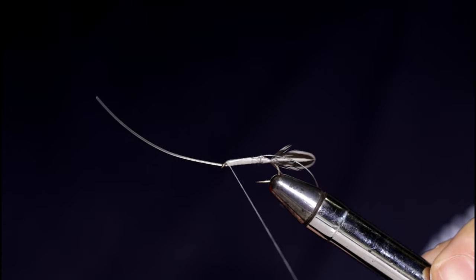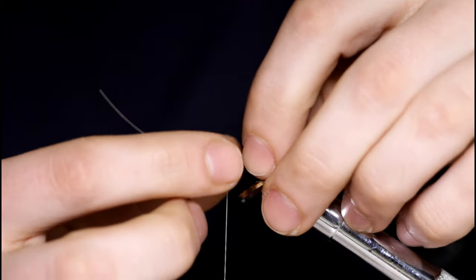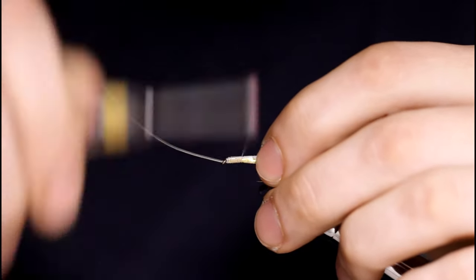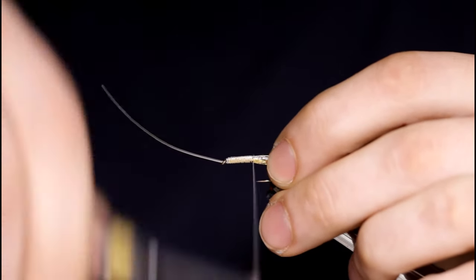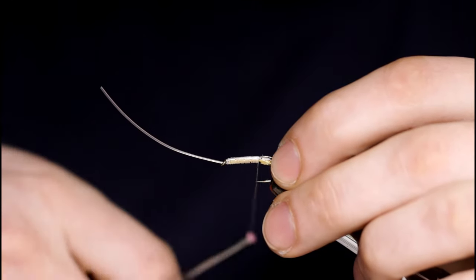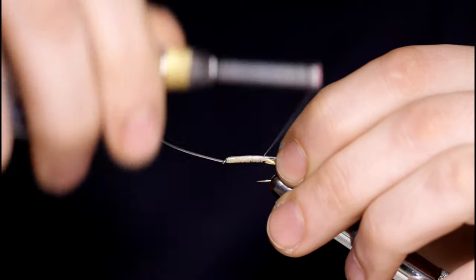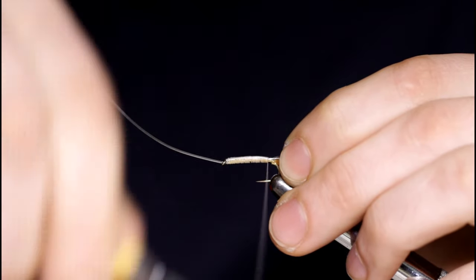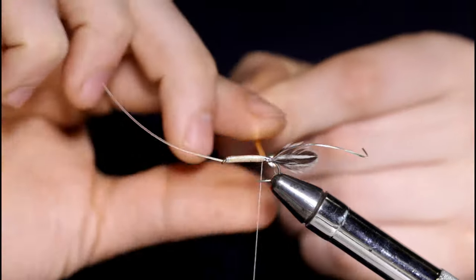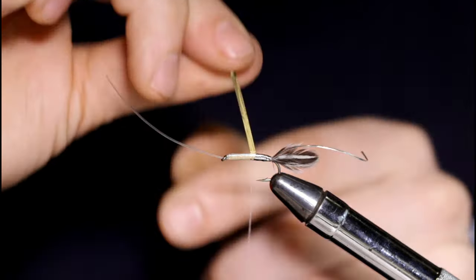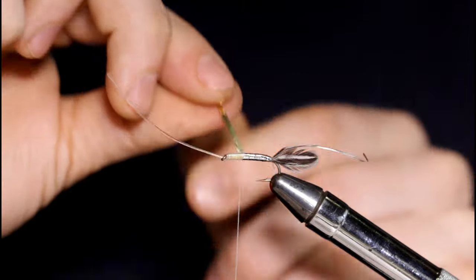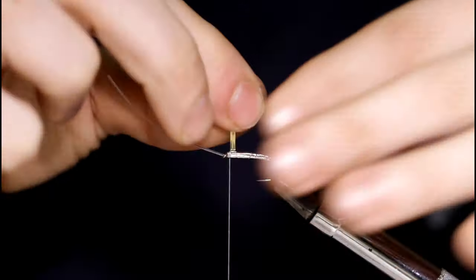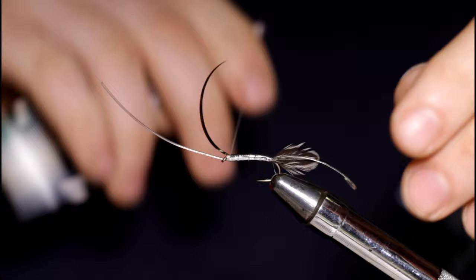Now I'll grab my flat silver tinsel and start tying this down. Once I get down to the barb here I'll start wrapping. So I'll grab my flat silver tinsel. Even turns, one in front of the other. Once I get down here I'll just bind down the tinsel. A few turns in front and behind and snip it off.